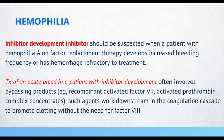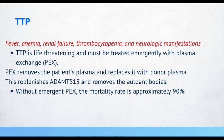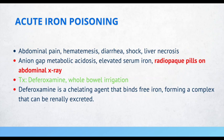Patients with TTP present with fever, anemia, renal failure, thrombocytopenia, and neurologic manifestations. TTP is life-threatening and must be treated emergently with plasma exchange, which removes the patient's plasma and replaces it with donor plasma, replenishing ADAMTS-13 and removing autoantibodies. Without emergent plasma exchange, the mortality rate is approximately 90%. A patient with acute iron poisoning will present with abdominal pain, hematemesis, diarrhea, shock, and liver necrosis. You may also note an anion gap metabolic acidosis, elevated serum iron, and radiopaque pills on abdominal X-ray. Treat with deferoxamine — a chelating agent that binds free iron forming a complex that can be renally excreted — and whole bowel irrigation.